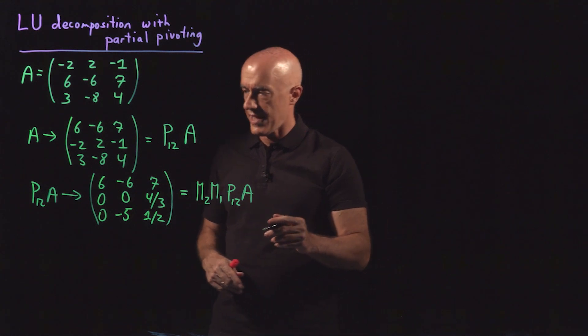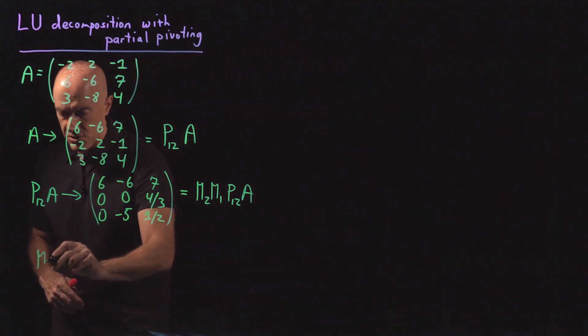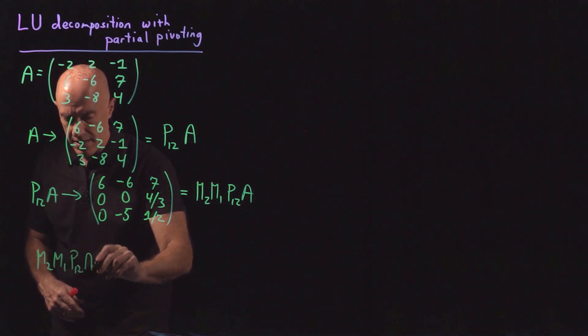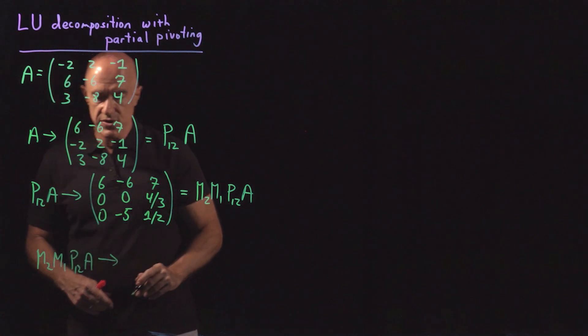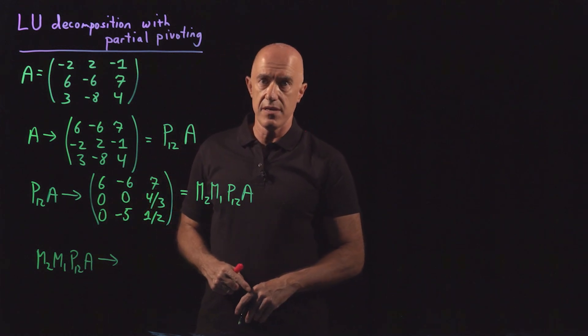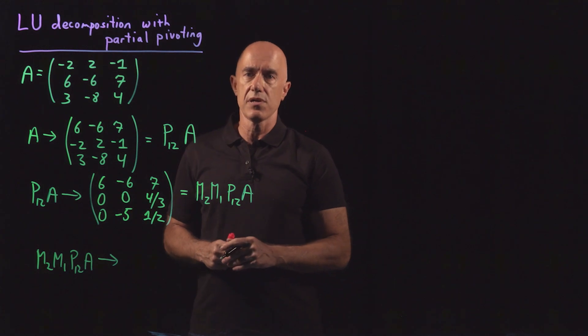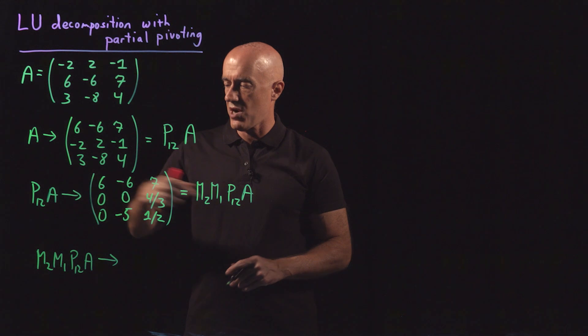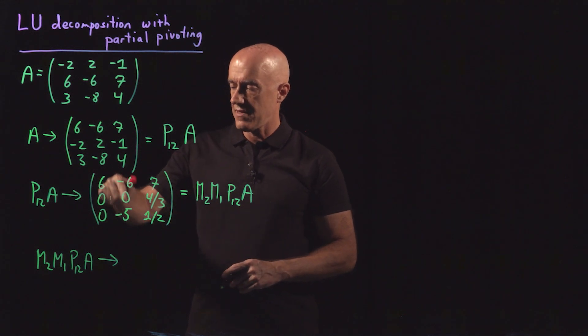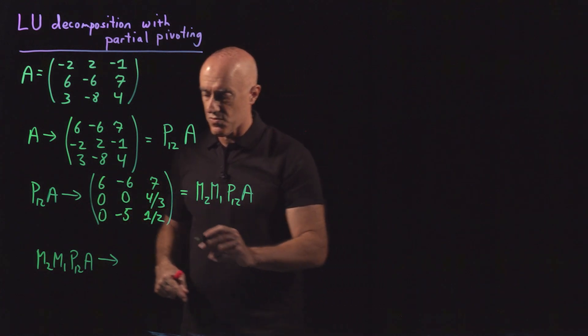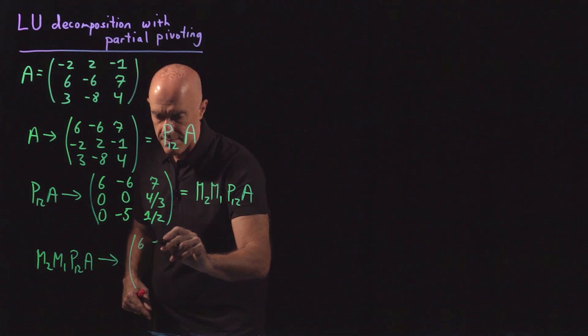Finally, the last step. We have M2 and M1 times P12A. What do we do here? Now we look in the second column. Here, in fact, we have a 0 in the pivot. So that's never acceptable, even when you're doing this by hand. But we do the procedure of partial pivoting. We look down and find the largest in magnitude pivot. Here there's only 1 and it's minus 5. And then we flip the rows. So we end up with 6 minus 6, 7.